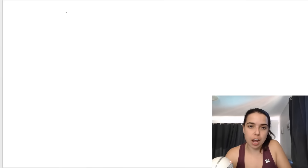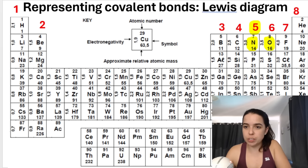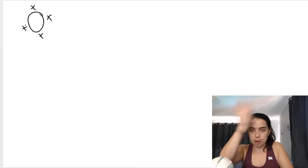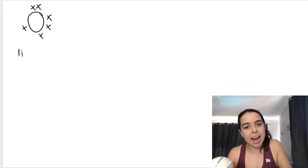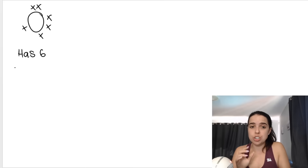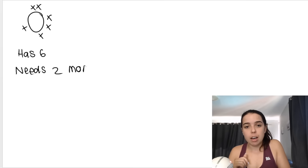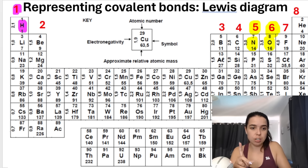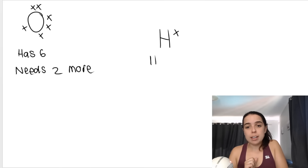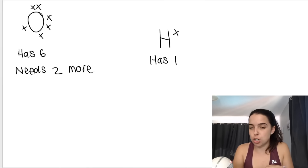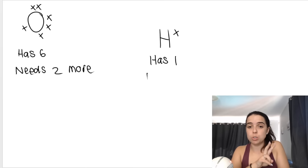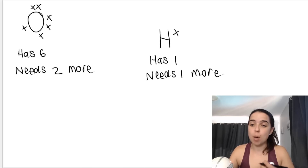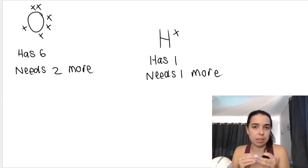For oxygen, look at the periodic table — it has six valence electrons. Draw one cross on each side, then add a fifth and sixth. Oxygen has six and needs two more to reach octet structure. Hydrogen has one valence electron and needs one more — but remember, hydrogen is the exception; it needs only two in total, meaning it needs just one more. Knowing how many valence electrons an atom has versus how many it needs helps determine whether it will form a single, double, or triple bond.